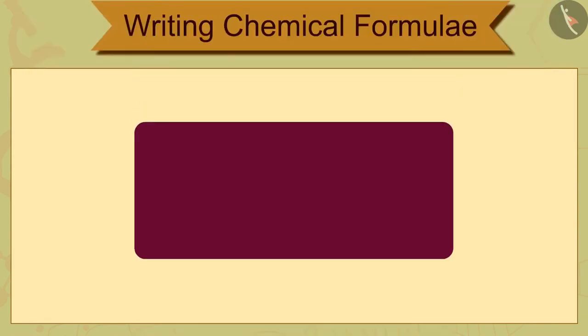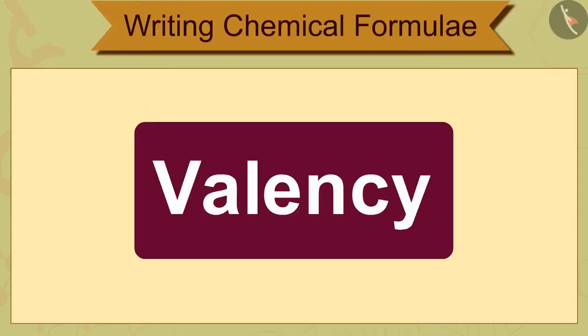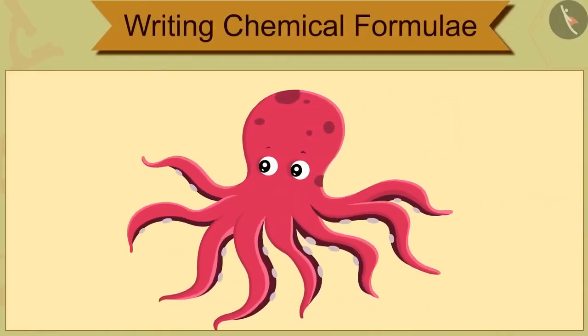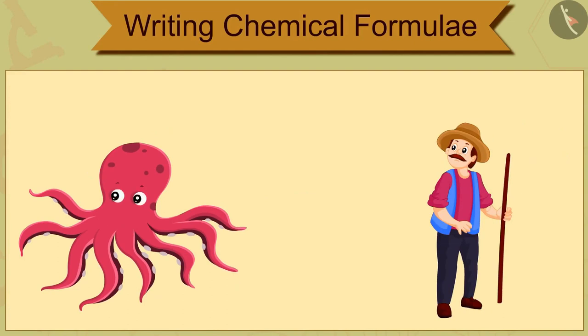Let us understand valency by an example. Imagine if an octopus is to hold some humans in such a way that its 8 arms are used with both arms of humans.